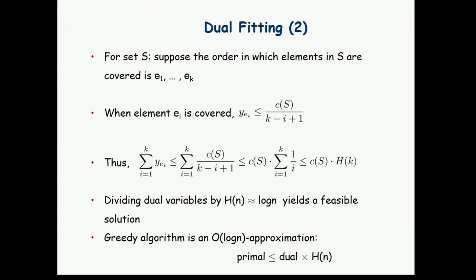Each dual constraint is violated by a logarithmic factor. Dividing by the log factor gives a feasible dual assignment. The ratio between the primal and dual objective functions is logarithmic. By weak duality, any feasible dual solution gives a lower bound on the optimal primal. Since we've defined a feasible dual solution via the greedy algorithm with the ratio at most log, this is also the approximation factor.